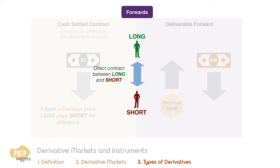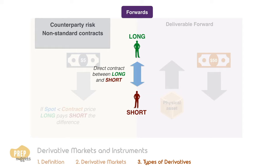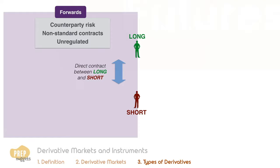Forwards are over-the-counter contracts in which the agreement is between the long and the short. As such, both parties are exposed to credit risk as either party has the potential to default from the agreement. As the contracts are negotiated, they are usually non-standard to fit the requirements of both parties. Forward contracts also tend to be unregulated.